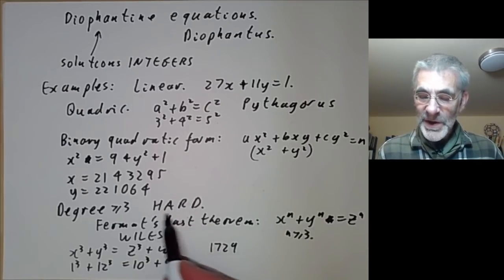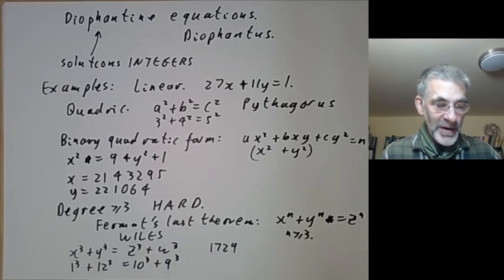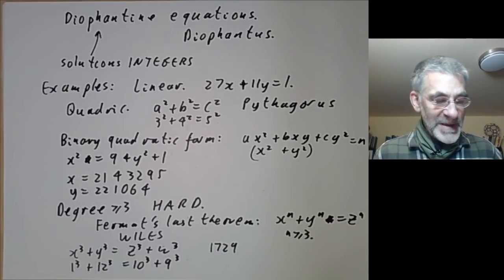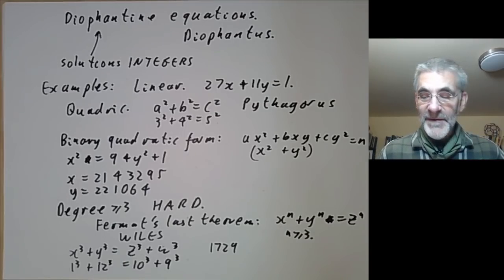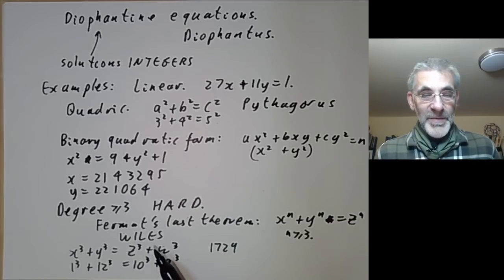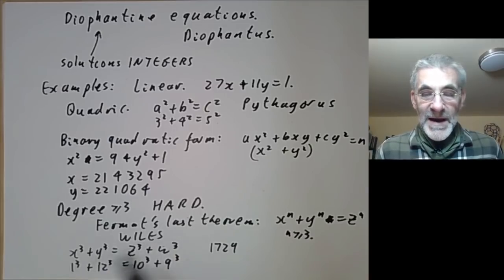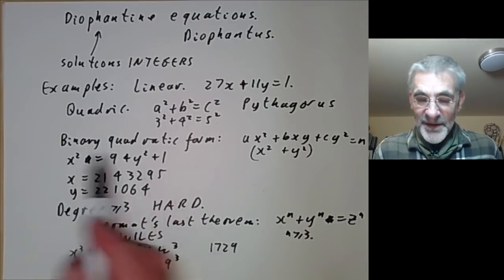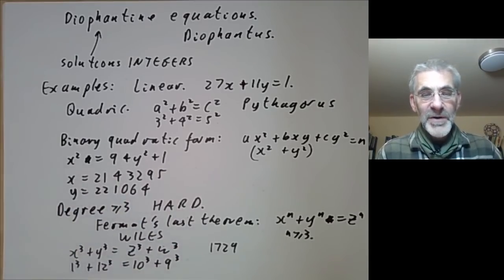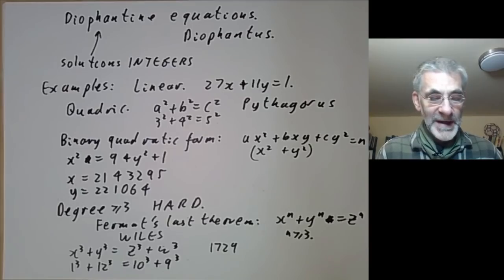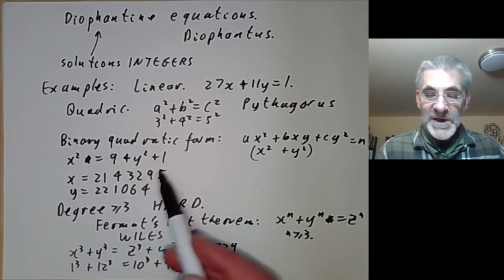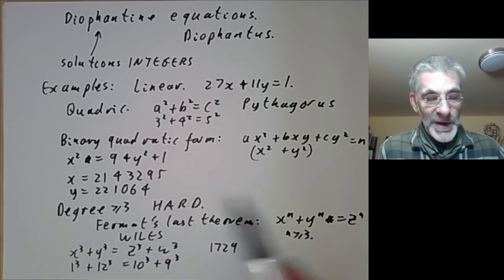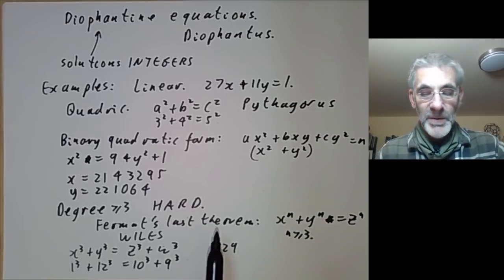When I say degree 3 and higher is hard, this is actually a theorem. Robinson, Davis, Putnam, and Matiyasevich proved that there is no algorithm that will tell you whether any given Diophantine equation has a solution. For a fixed equation you may be able to solve it, but no algorithm works for all Diophantine equations. So the best we can do is find methods for special classes, and we'll never run out of open problems.